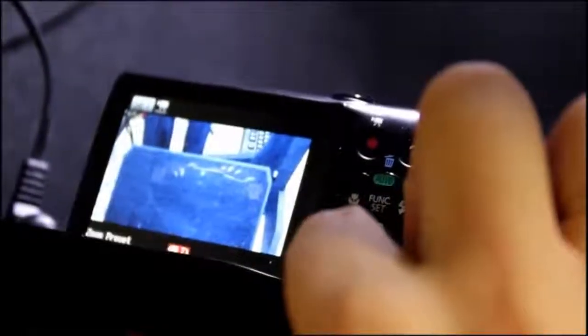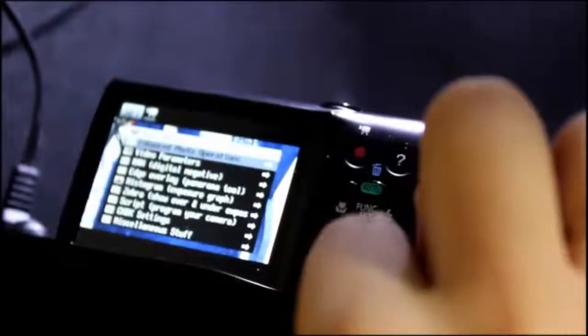Once the camera is on, hold the play button until you enter the review photo setting. Press the play button once. Alt should appear on the bottom of the camera screen. Press the menu button to bring up the CHDK menu.